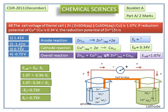Checking the answer: the fourth option is correct — the reduction potential of Zn²⁺/Zn is −0.73 volts. Thank you.